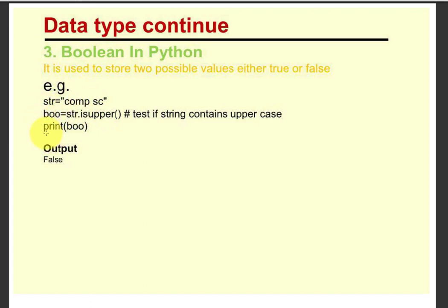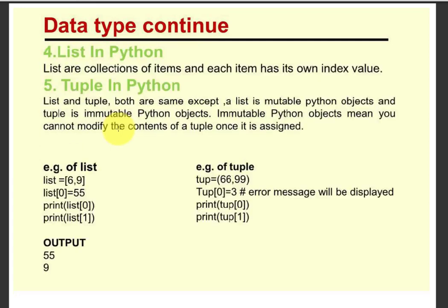When we execute print boole, what happened? We will get false — that is the output of our program. So boolean can store only the true and false value.